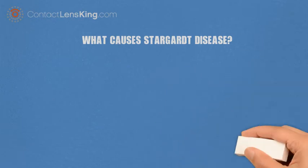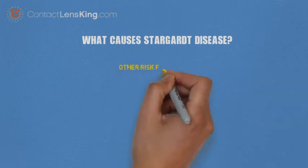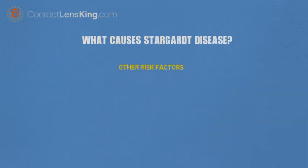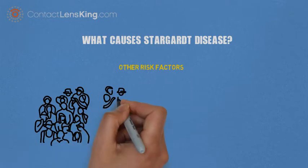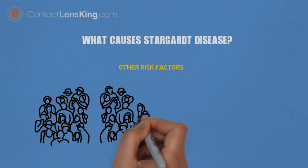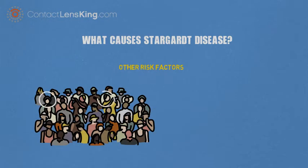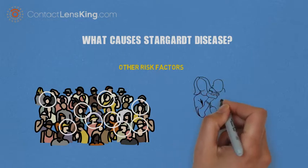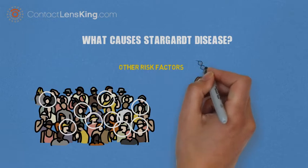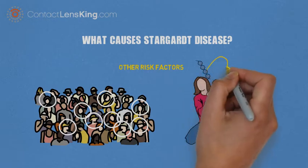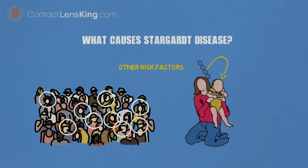There are some other risk factors that may also contribute to increasing an individual's chances of developing macular dystrophy. Caucasians seem to be more susceptible to developing the disease than any other race, as well as inheriting genes from parents who have a family history of this disease.